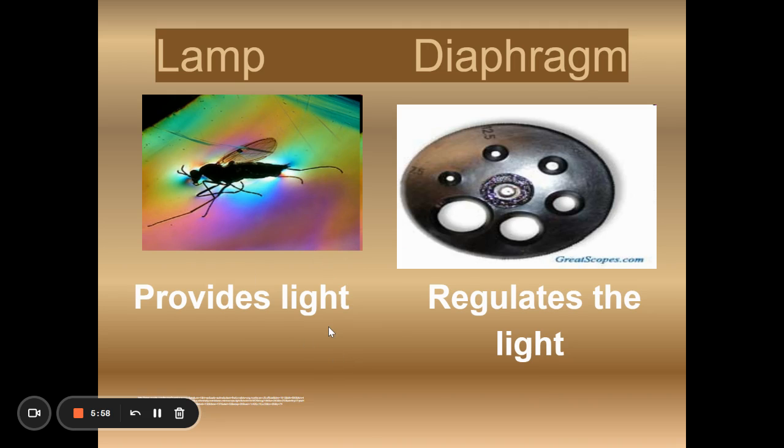Now the lamp, the light source, most of our microscopes have to be plugged in. Some of them can be charged. But you do need light to see the specimen. The diaphragm is what you're going to use to regulate the amount of light coming from your lamp. So how much of that light do you want to pass through your specimen up to your eye through the body tube?